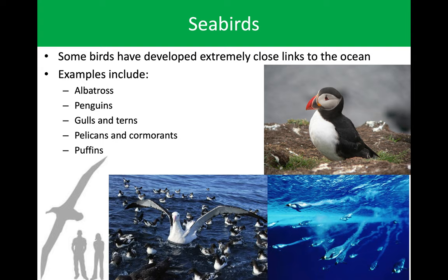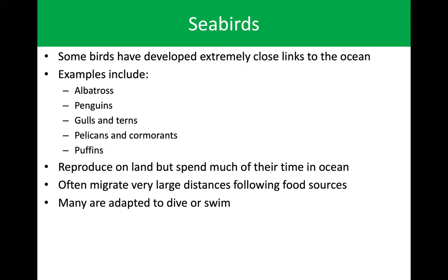A couple of our other animals to consider: seabirds. Many of these birds have developed a close relationship with the ocean. Penguins spend a huge portion of their time underwater and hunt exclusively fish. Pelicans and cormorants are also exclusively fish hunters. Basically many of these are reproducing on land but get their resources from the ocean. With that, they end up following these resources, which ends up being their migratory pattern. Some of these birds won't see land for months at a time as they follow krill through a migratory pattern. Many of them are adapted to dive and swim — the albatross, cormorant, and the penguin, which is an excellent example of a long-distance swimmer.